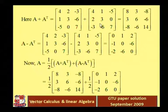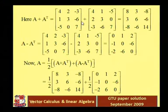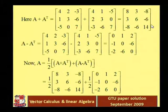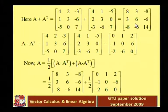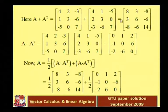A plus A transpose equals: 4+4=8, 2+1=3, minus 3 plus minus 5 = minus 8; 1+2=3, 3+3=6, minus 6 plus minus 6 = minus 12... giving the matrix with entries 8, 3, minus 8 / 3, 6, minus 6 / minus 8, minus 6, 14. You can verify this is symmetric because when you transpose it, you get the same matrix — first row equals first column, second row equals second column, third row equals third column.